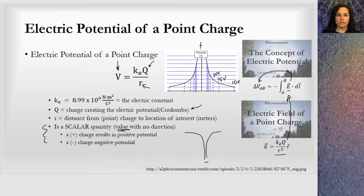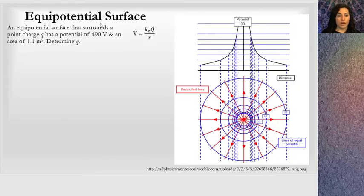So I picked out just a quick example here of an equipotential surface. And we saw this in the concept for electric potential. An equipotential surface that surrounds a point charge Q is 490 volts.